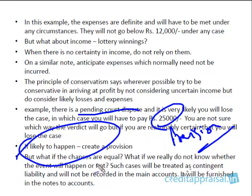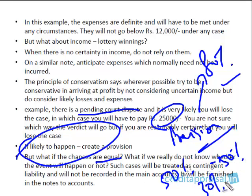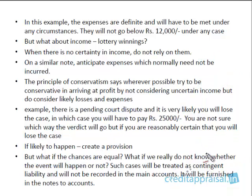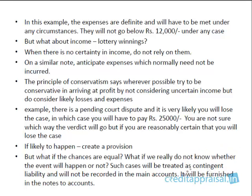But what if the chances are equal? If there's an 80% chance the company is going to lose the case that's one thing, but what if there's only a 50% or 30% chance? When you're not sure whether the event will happen or not, we treat it as a contingent liability. In such cases, it will not be recorded in the books of account but will be mentioned separately in the notes to accounts. This will be discussed in a later chapter.